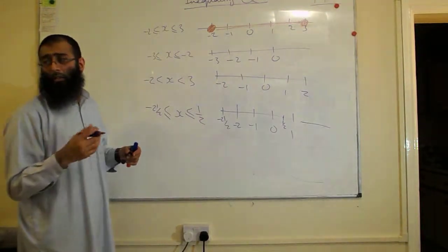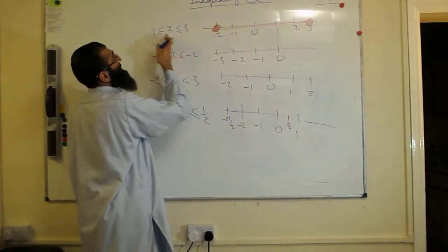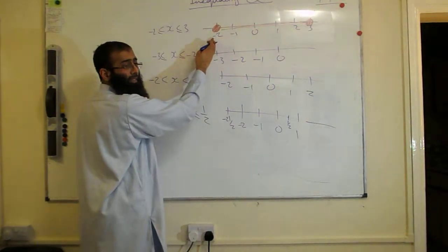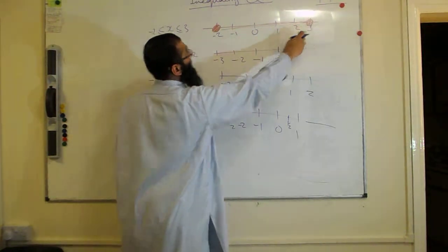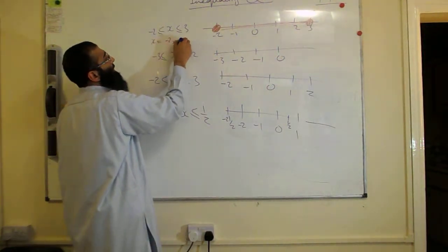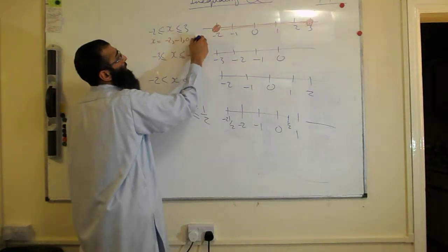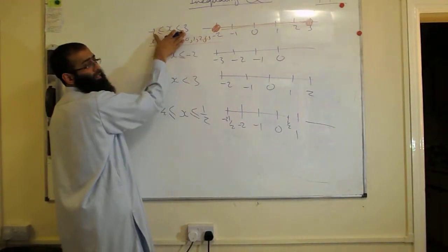Now if we look at the solution set to that, the solution for this will be minus 2, minus 1, 0, 1, 2, and 3. If you look at the integer values, we said X is equal to minus 2, minus 1, 0, 1, 2, and 3. So these are the solutions to this inequality looking at the integer values.